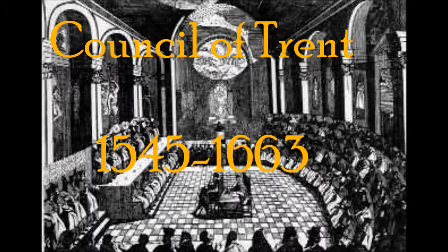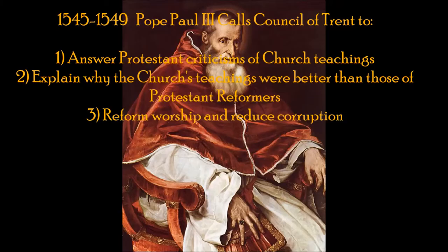The Council of Trent was an 18-year-long series of committee meetings attended mostly by church officials and theologians. In principle they came from all over the world, but in practice they mostly came from Italy. There were three major purposes for the Council that Pope Paul III had called. The first was to answer Protestant criticisms of the church's teachings, which had been getting louder and louder since 1518. The second purpose was to explain exactly where the church disagreed with Protestant ideas about theology and why the church thought Protestants were wrong. And along the way, the committee decided that they wanted to reform worship in ways that would make it more appealing and meaningful to a popular audience, and reduce corruption, which was a big problem in the medieval and Renaissance church.